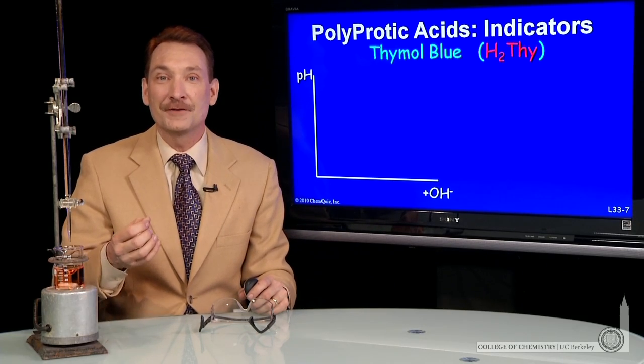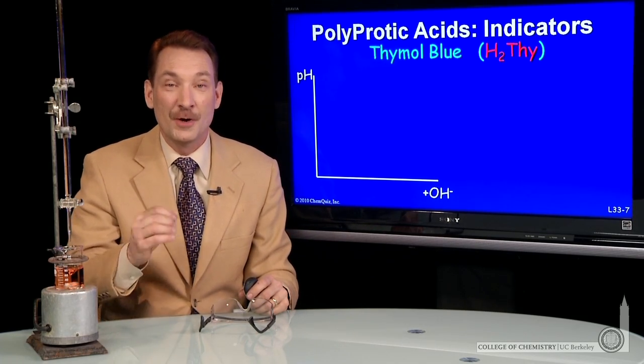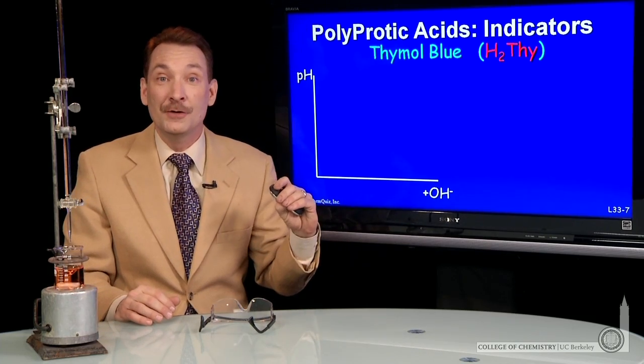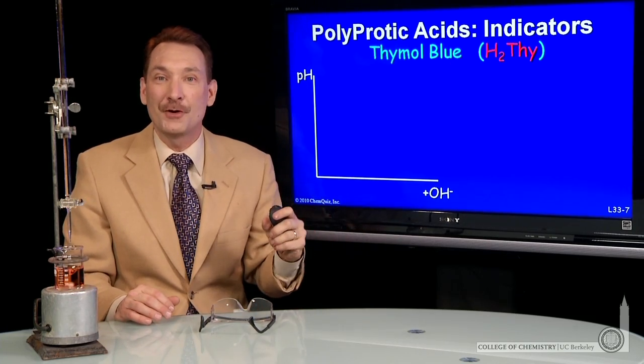Acid-base indicators are compounds that change color with pH. Often they're polyprotic acids. Thymol blue is an example. It's a diprotic acid.